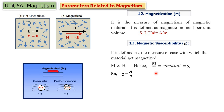Susceptibility and permeability are closely related terms. The magnetic flux passing through the material also depends on H, so B is directly proportional to H and B/H is permeability. Similarly, magnetization is directly proportional to H so M/H is susceptibility. We are going to study the relation between permeability and susceptibility, but before that there is one more term.